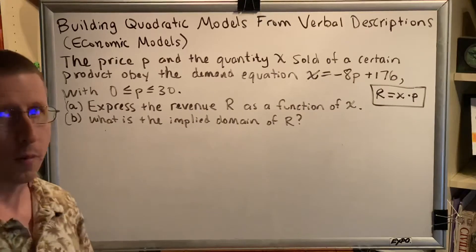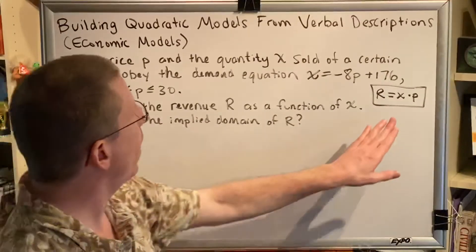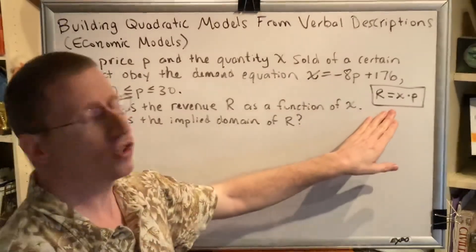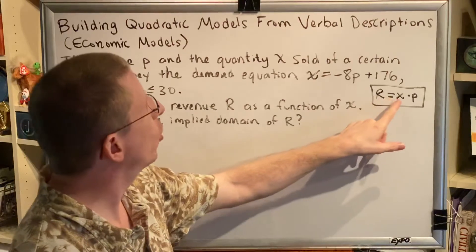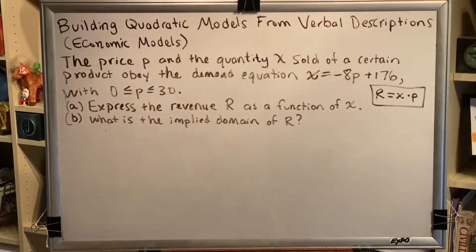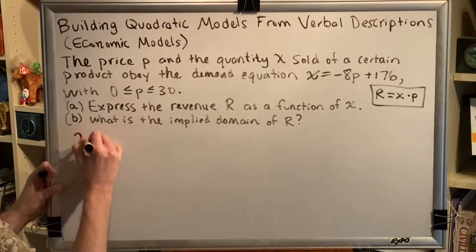To begin this problem, the first thing we have to understand is that there are actually two equations: the one they gave us and the one that we are expected to just know, that revenue equals quantity sold times price. Both equations are important, so we'll write both equations for this problem.